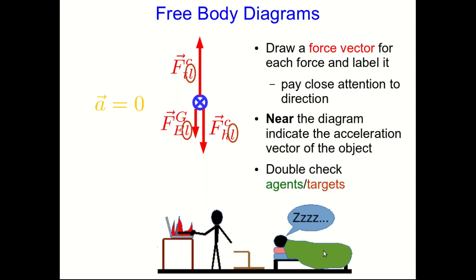Finally, it's a good idea to do a double check of agents and targets. If you're using the notation I'm using for forces, then the second subscript on every force should be its target. And they should all be the same. On your free body diagram, every force should have the object of interest as its target. If you find that by accident you've included a force where the object of interest is the agent, that doesn't belong here. That's a force exerted by the object, not on it. And it won't have any effect on the object's motion. So get rid of it. It doesn't belong here.